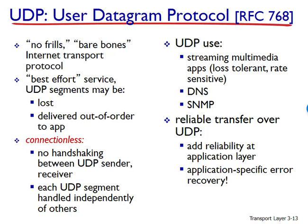Nevertheless, many important applications run over UDP rather than TCP. UDP is used for RIP routing table updates — RIP is a routing protocol for routing packets across a network. Since RIP updates are sent periodically, lost updates will be replaced by more recent updates, making the lost out-of-date update useless, so UDP is perfectly acceptable. UDP is also used to carry network management data, and is preferred to TCP in this case since network management applications most often run when the network is in a stressed state, precisely when reliable congestion-controlled data transfer is hard to achieve. And DNS runs over UDP, avoiding TCP's connection establishment delays.